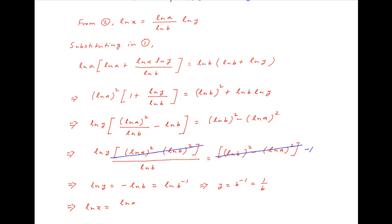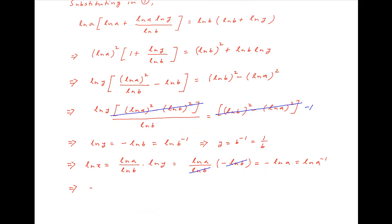Now, lnX is equal to lnA upon lnB times lnY. Substituting the value of y obtained above, we get lnX is equal to lnA upon lnB times minus lnB. And therefore, lnX is equal to minus lnA, which implies that x is equal to A inverse, which is equal to 1 upon A.